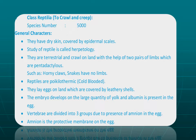Reptiles crawl on land with the help of two pairs of limbs having five digits — meaning they are pentadactyl — with horny claws. Snakes have no limbs because their limbs are degenerated. Reptiles are poikilotherms, cold-blooded animals like amphibians; they cannot maintain body temperature. Estivation and hibernation are also observed in reptiles. They are oviparous — egg-laying animals. Their eggs are covered by leathery shells, and the embryo develops on a large quantity of yolk and albumin present in the egg.